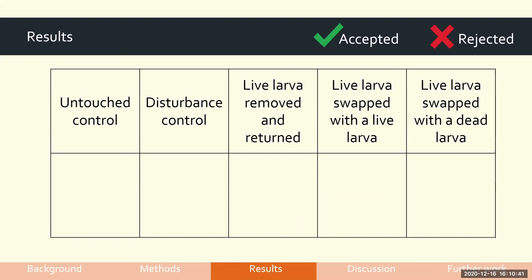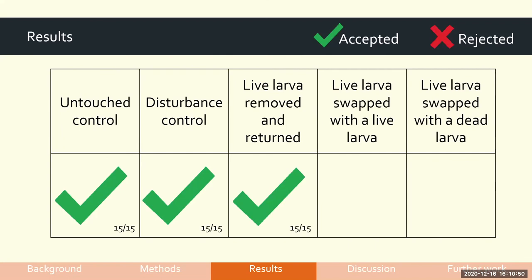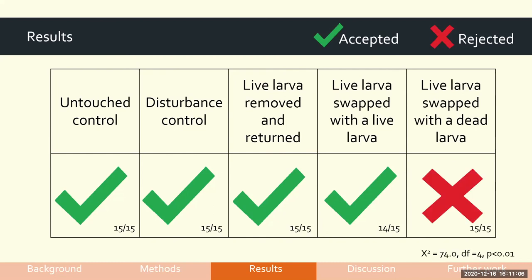In the untouched control, disturbance control, and live larva removed and returned group, all 15 out of 15 larvae were accepted back into the colony. One live larva swapped with another live larva from elsewhere was rejected, but otherwise 14 out of 15 were accepted. All 15 out of 15 dead larvae were rejected and placed into the waste area.